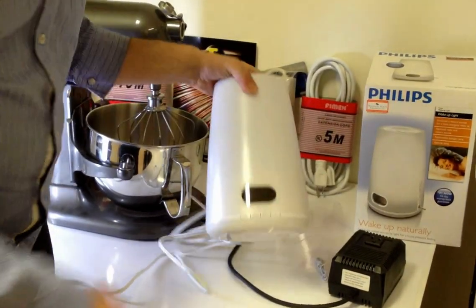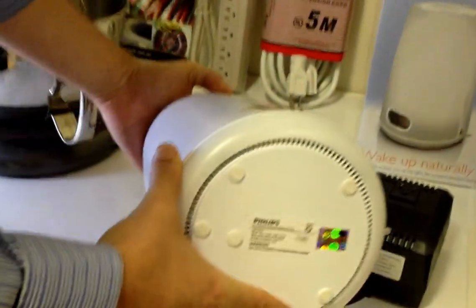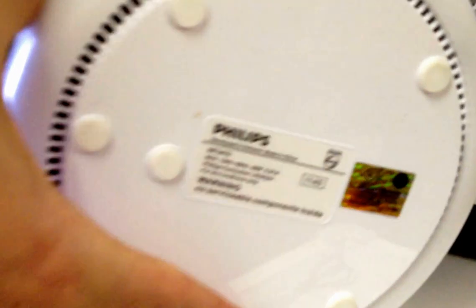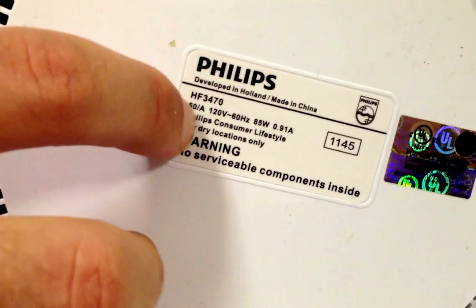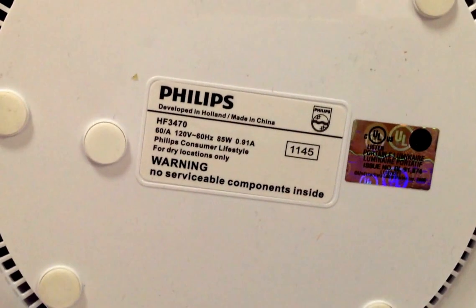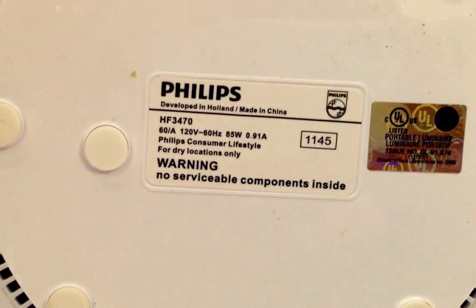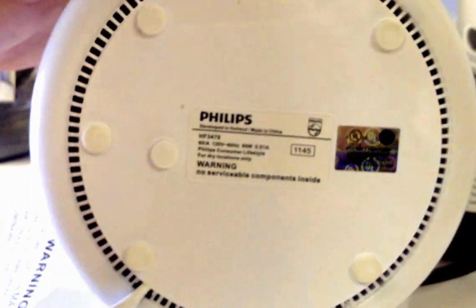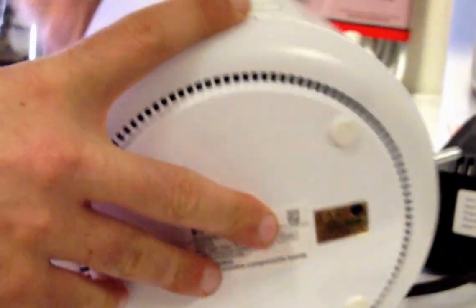To work out the input power, if you get your device you can actually turn it upside down and have a look. And on this wake up lamp, you can see the input power is 120 volt, 85 watts, 0.19 amp. So we look at the watts and the wattage for this one is under 100 watts. So for this one we would recommend the 100 watt step down transformer.